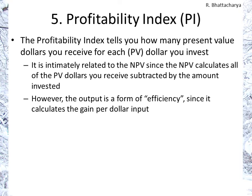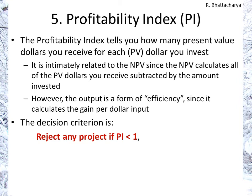The profitability index tells us how many present value cash dollars we receive for every present value dollar invested. It is similar to net present value, but while NPV adds everything together and checks if it's greater than zero, the profitability index provides the additional piece of information of how many dollars we get in per unit dollar that goes out — it is a measure of efficiency. The criterion is that we need to get more than one dollar in for every dollar going out, and we would accept a project with a profitability index greater than one.